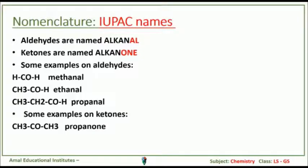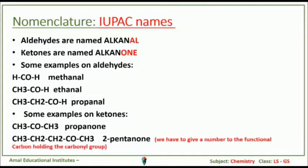Some examples on ketones. The first ketone is propanone: CH3-CO-CH3, where the carbonyl group is internal. The next example is CH3-CH2-CH2-CO-CH3, which is two-pentanone. Here, we have to give a number to the functional carbon holding the carbonyl group.